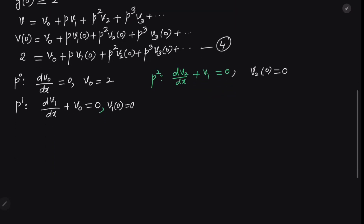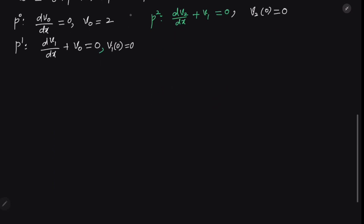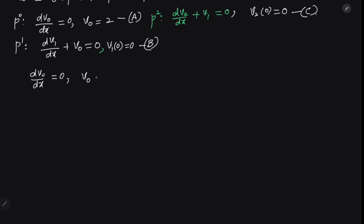We solve these equations in sequence. From equation A, dv0/dx = 0. Integrating gives v0 = C1. Applying the initial condition v0(0) = 2, we get C1 = 2. So the first solution is v0 = 2.